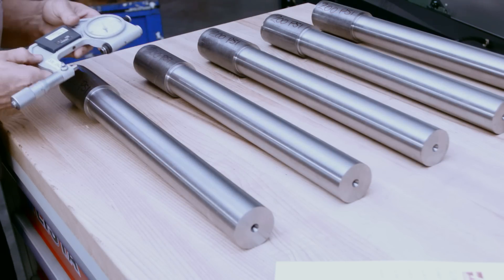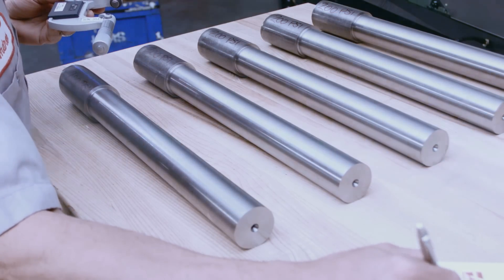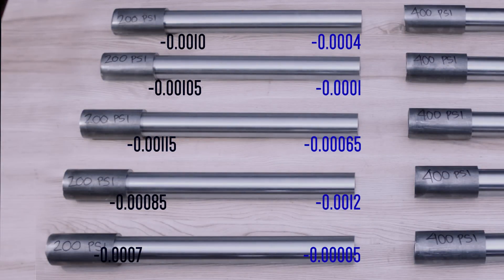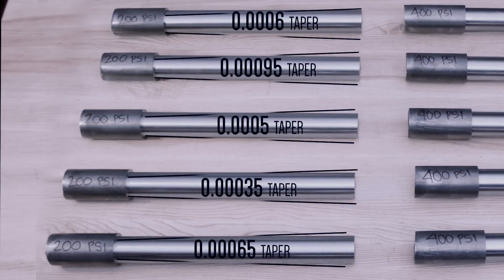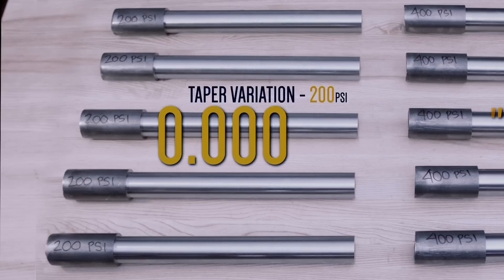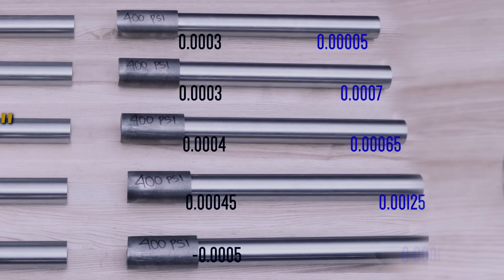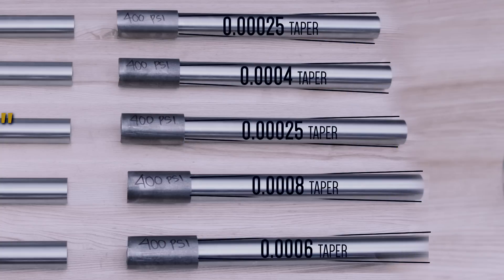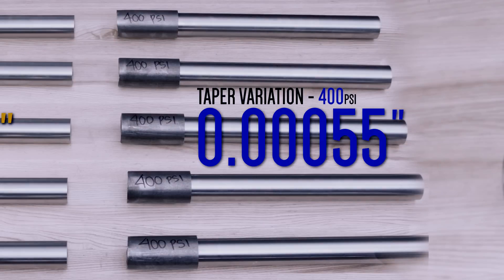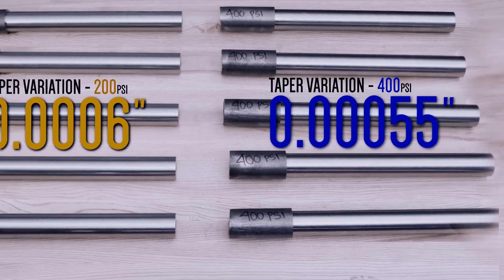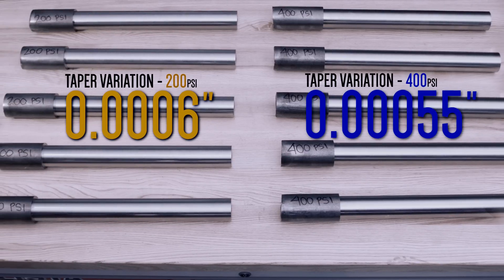For the 200 psi shafts, we take measurements at both ends of each shaft to get a taper value. Then we compare these 5 values to find how much the taper varies for all 5 shafts. The taper varies by 6 tenths. Now let's do the same thing for the 400 psi shafts. We find the taper for each shaft and compare these values. The 400 psi shafts vary by 5 and a half tenths. Maybe this seems surprising. But we can clearly see that more tailstock pressure did not make the shaft profiles any more consistent.